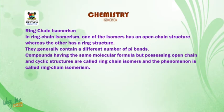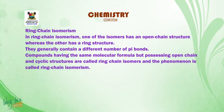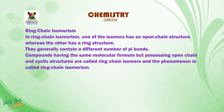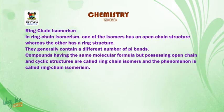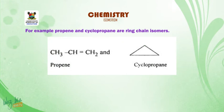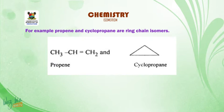In ring chain isomerism, one of the isomers has an open chain structure whereas the other has a ring structure. They generally contain a different number of pi bonds. Compounds having the same molecular formula but possessing open chain and cyclic structures are called ring chain isomers, and the phenomenon is called ring chain isomerism. For example, propene and cyclopropane are ring chain isomers.